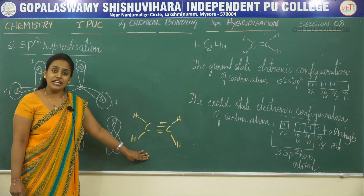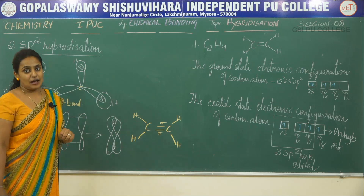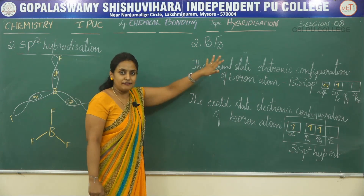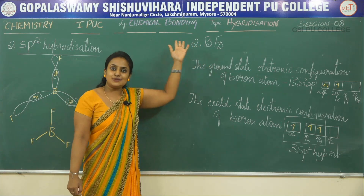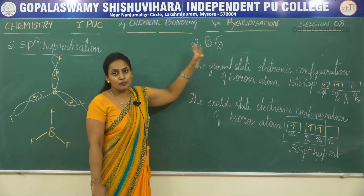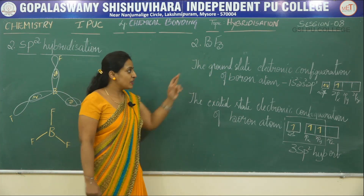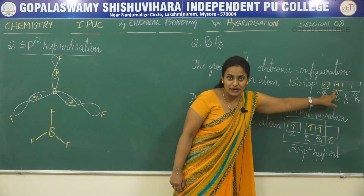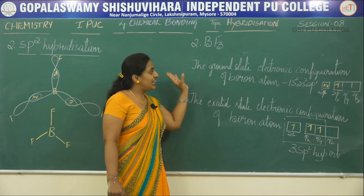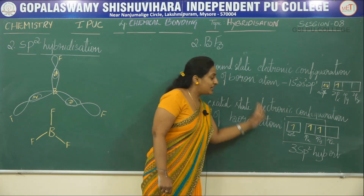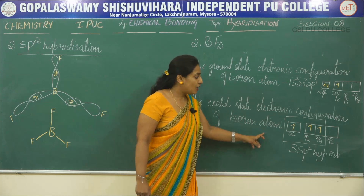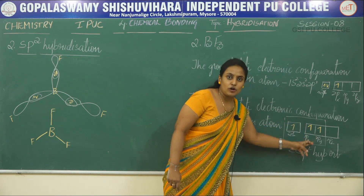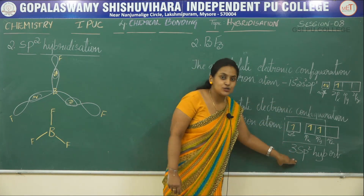Now let us consider the second example, BF3, that is boron trifluoride. The central atom is boron, present in the least number. The ground state electronic configuration of boron is 1s2, 2s2, 2p1, as its atomic number is 5. There is only one half-filled atomic orbital but three surrounding fluorine atoms, so excitation of boron takes place. After excitation, there are three half-filled atomic orbitals, which intermix to form three sp2 hybrid orbitals.